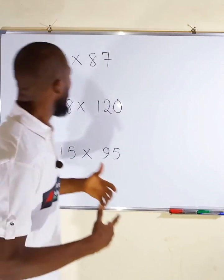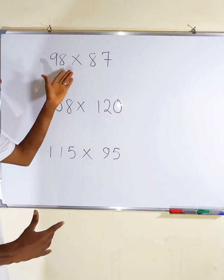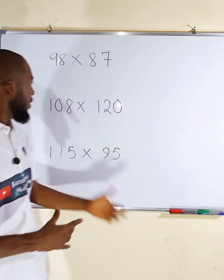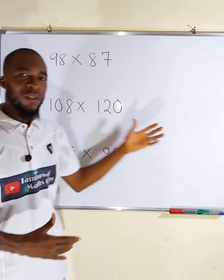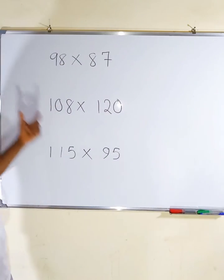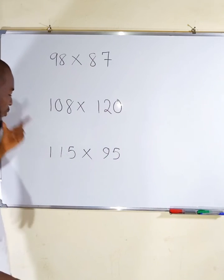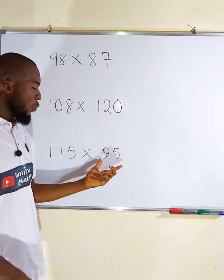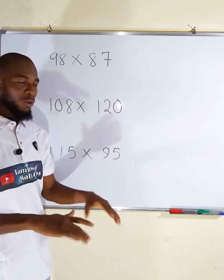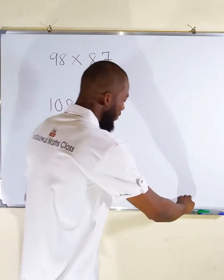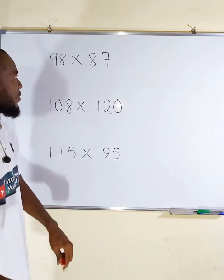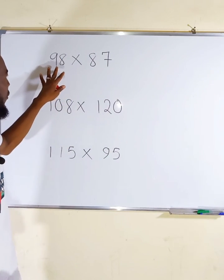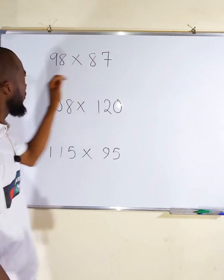I have chosen three sets of numbers at random. The first set are all less than 100, the second set are all greater than 100, and the last set is a combination where the first number is greater than 100 while the second is less than 100. Let's begin with the first one.